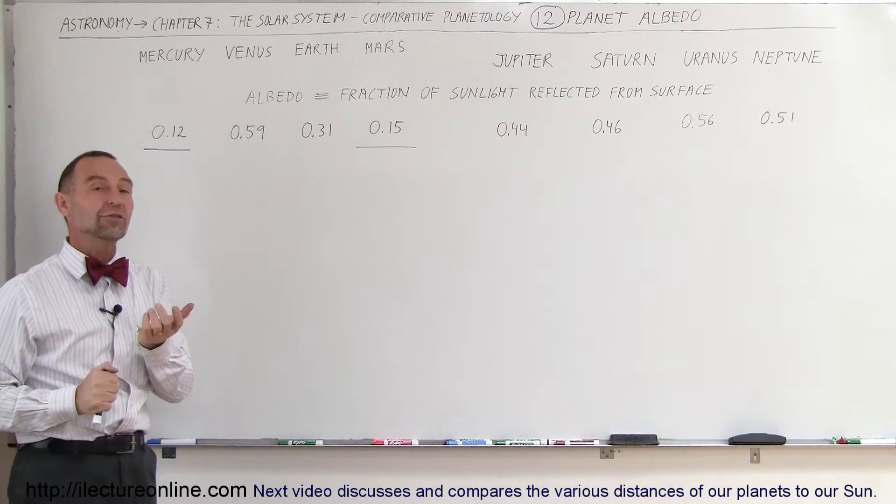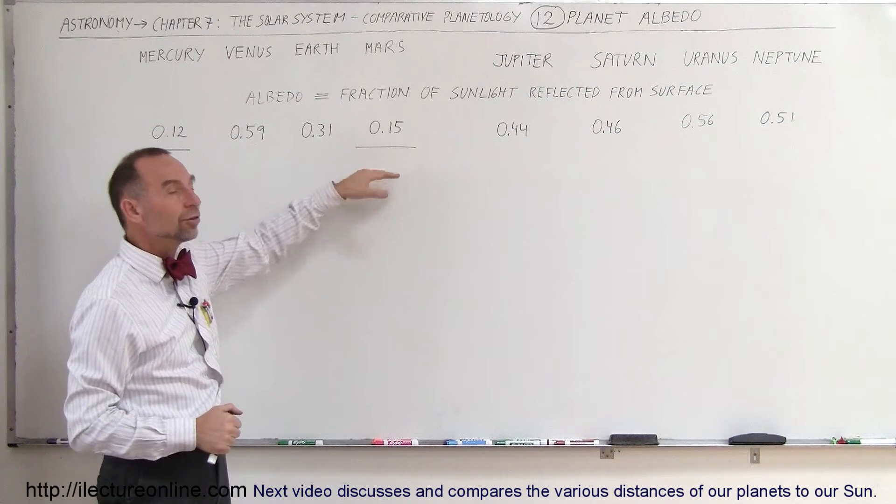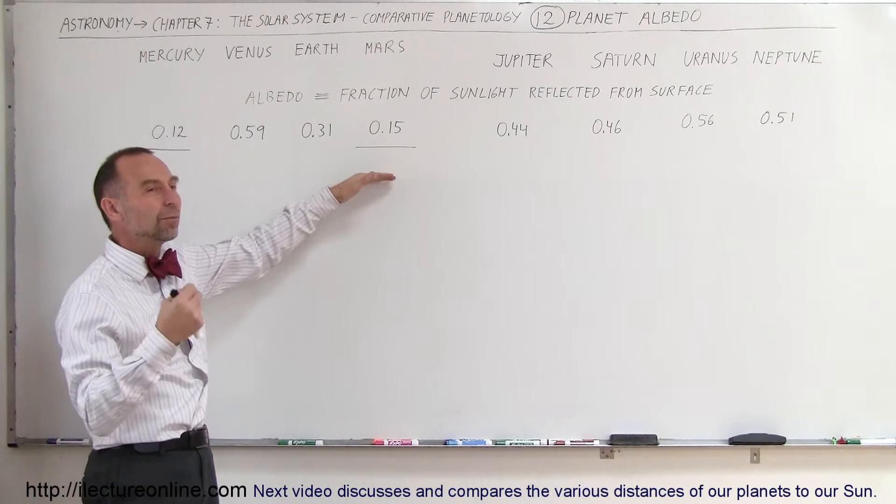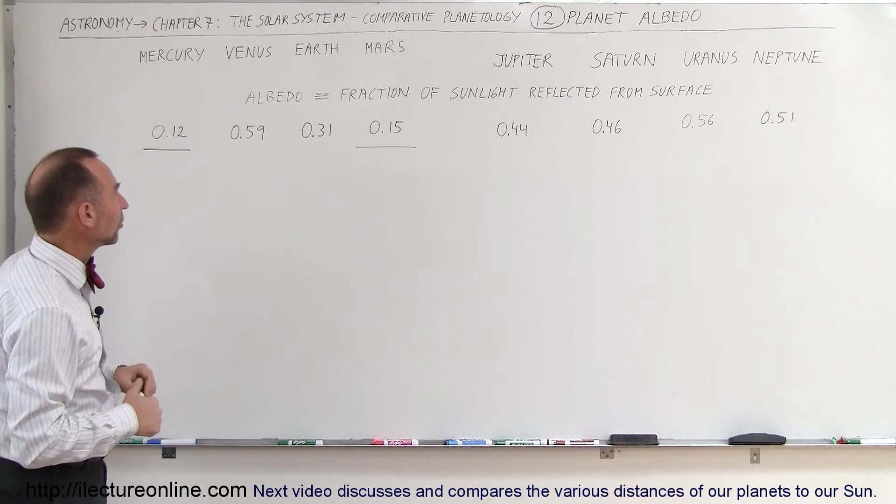Also, the coloration of the surface is relatively dark. It's a little bit darker for Mercury, a little bit grayer. For Mars, it's a little redder. So you can see that Mars absorbs a little bit less, reflects a little bit more. Mercury absorbs a little bit more than Mars.